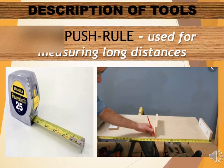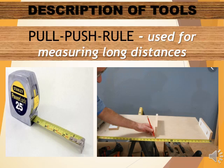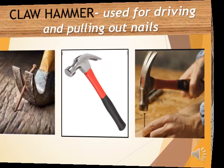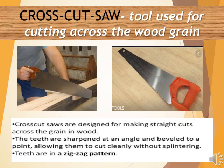Description of tools: The first is the pull-push rule, used for measuring long distances. The claw hammer is used for driving and pulling out nails. The crosscut saw is a tool used for cutting across the wood grain. Crosscut saws are designed for making straight cuts across the grain in wood; the teeth are sharpened at an angle and beveled to a point, allowing them to cut cleanly without splintering.